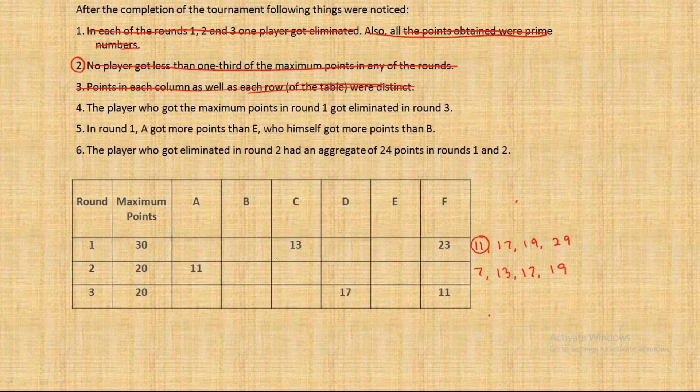One between B and E got 11 points. Now to determine who, the fifth point will help. In round one A got more points than E who himself got more points than B. So E got more than B, that means between B and E, E cannot be eliminated. It was B who got eliminated. So I would write 11 and then not applicable in the rounds after that for B.